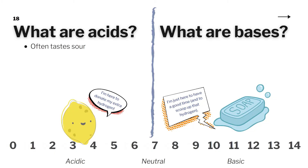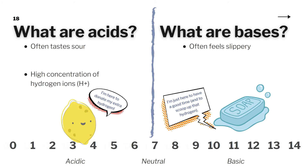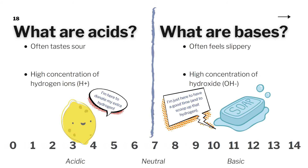You may have noticed that acidic things tend to taste sour and that some basic things like soap or bleach tend to feel slippery. But what does it actually mean for something to be acidic or basic? To give you a short answer, an acidic solution has a high concentration of hydrogen ions, greater than that of pure water, and a basic solution has a low concentration of hydrogen ions, less than that of pure water.